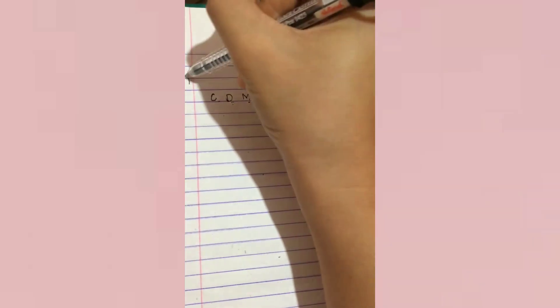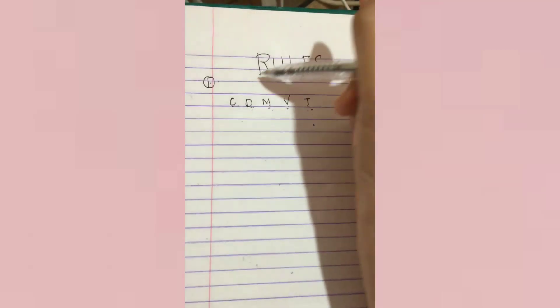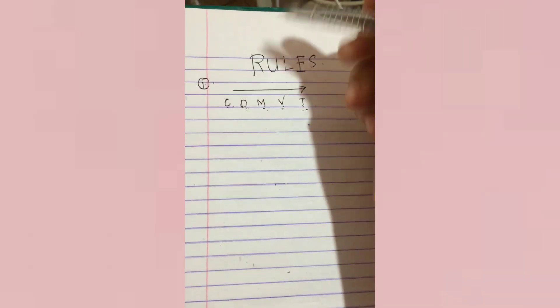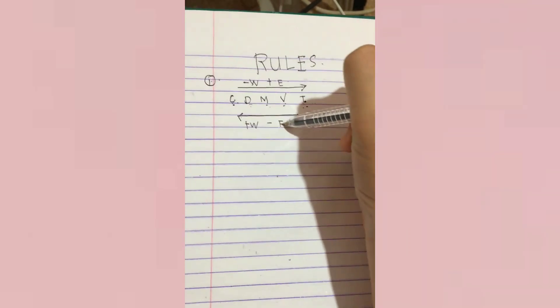Before we calculate CDMVT, we should remember some rules. The first rule is: when we want to calculate from compass north to true north, we should subtract westerly and add easterly. If we want to calculate from true north to compass north, we should add westerly and subtract easterly.